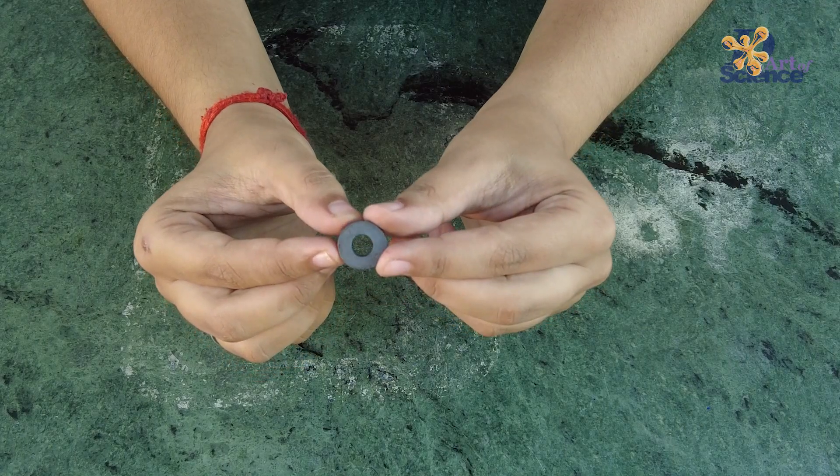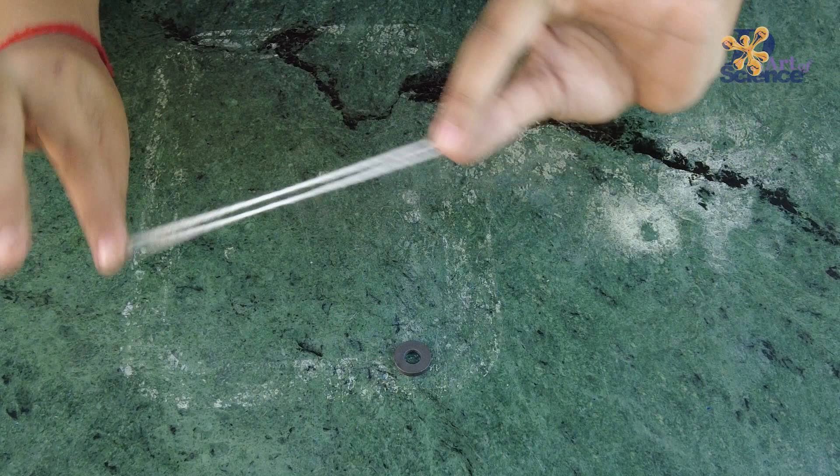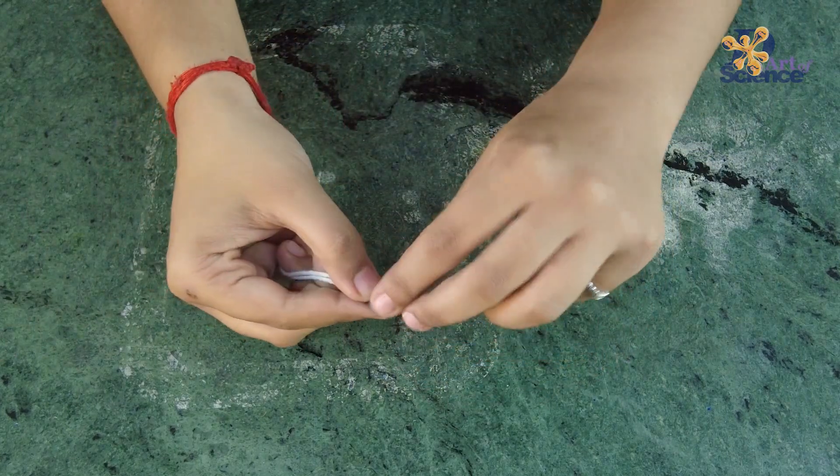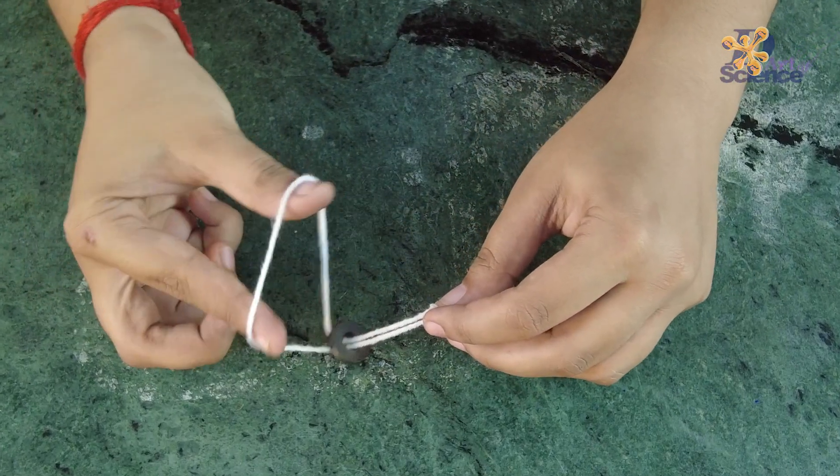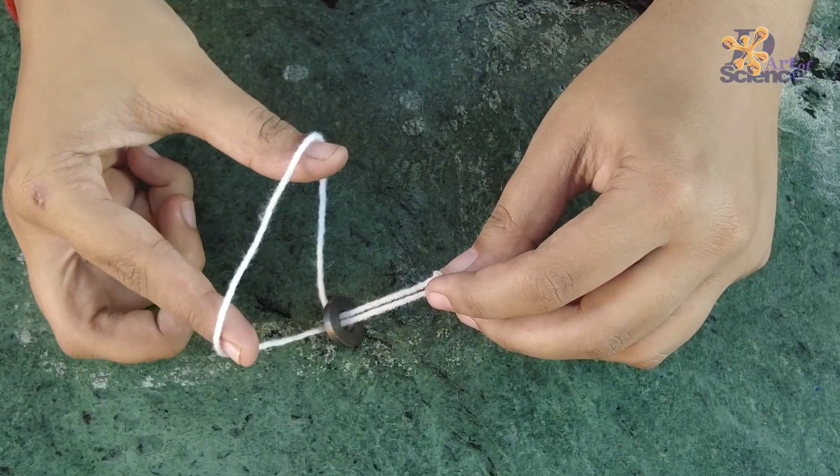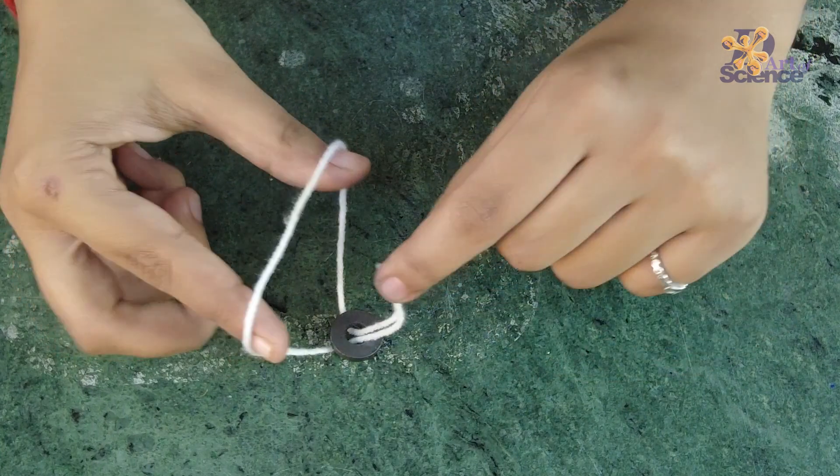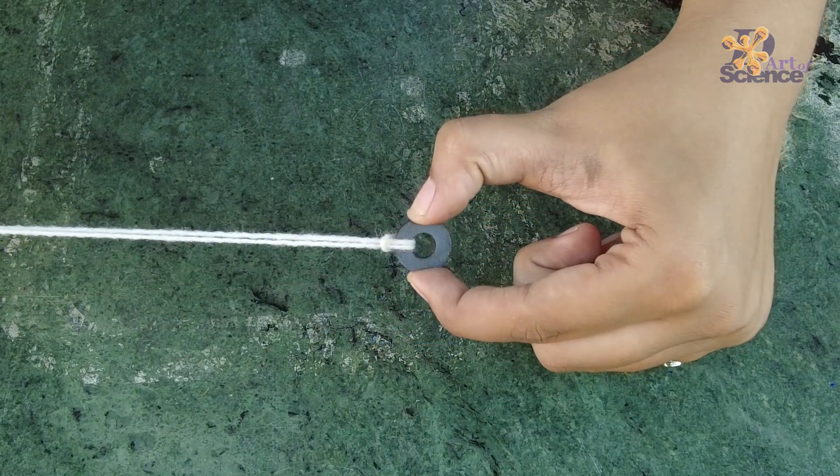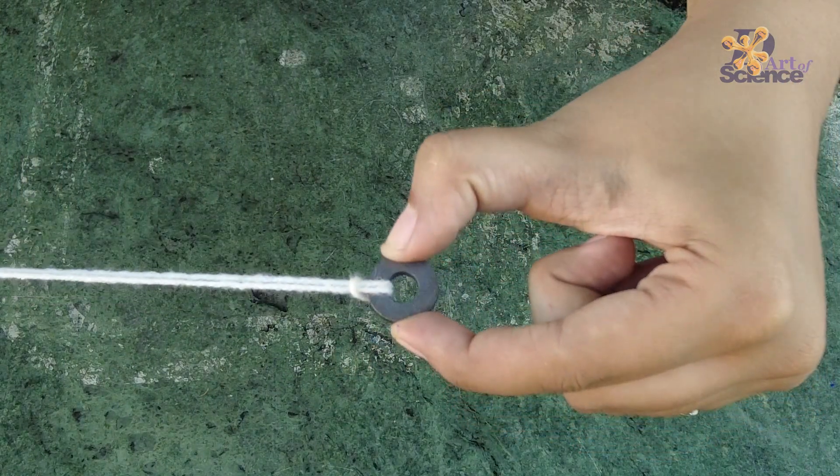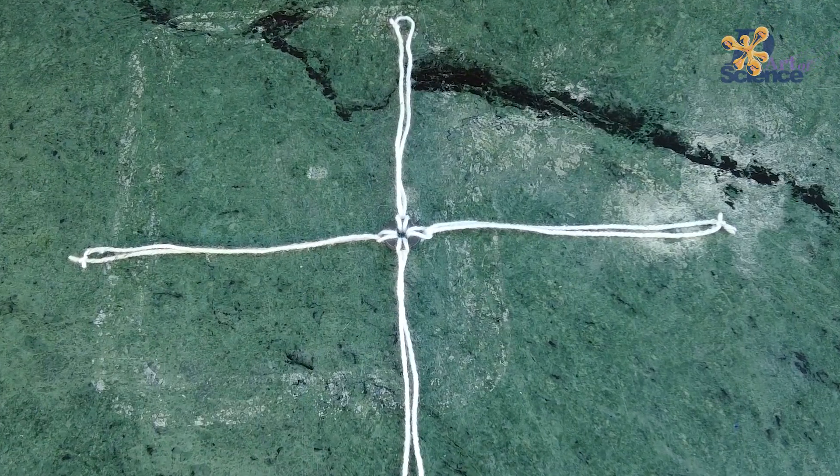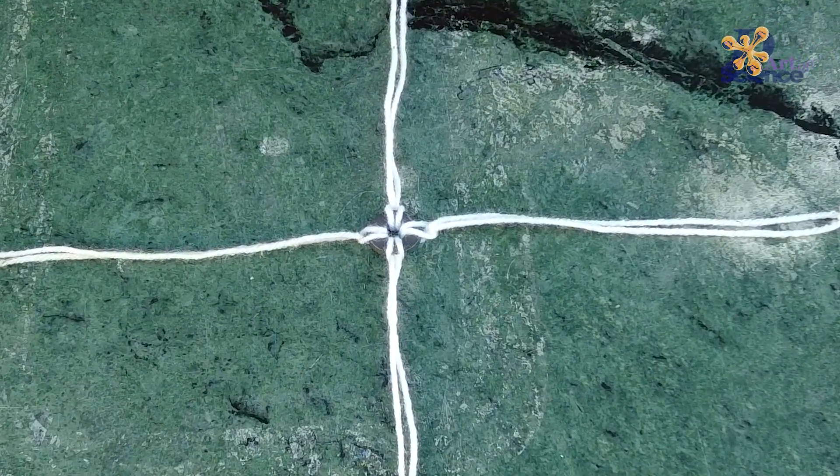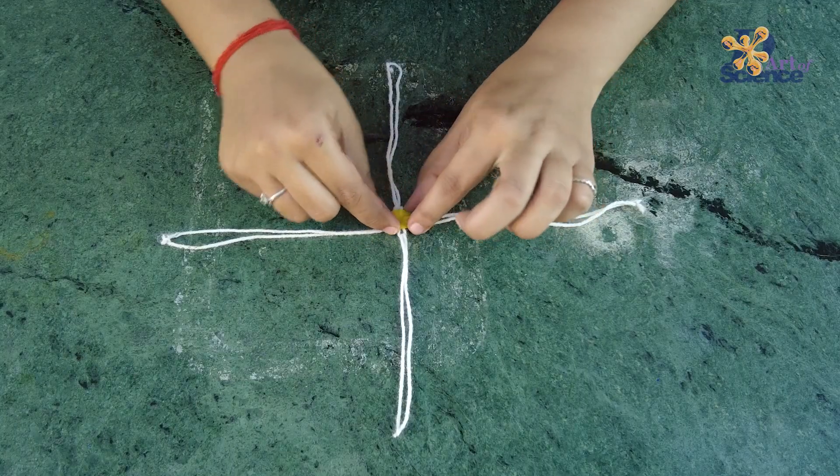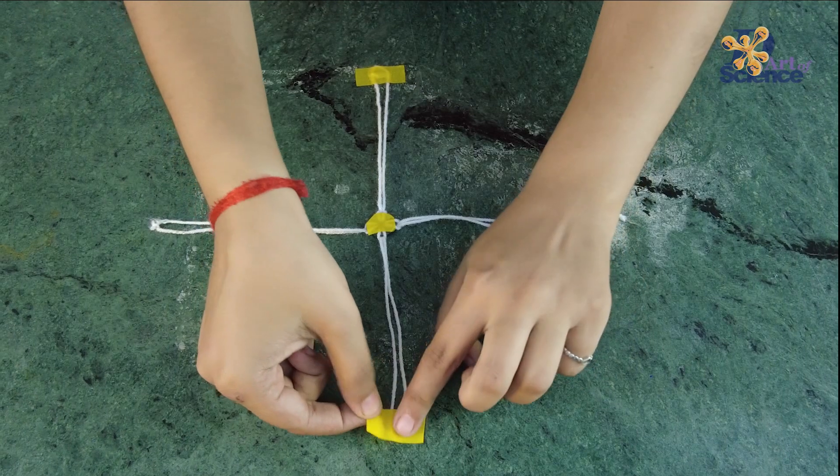Take a ring magnet. Take the piece of thread. Put it inside the hole of the magnet. And pull this end through the other end to lock it like this. Repeat the same process for all four pieces of thread and arrange them as shown. Add a small piece of tape to secure the thread. Tape all four sides of the thread down.